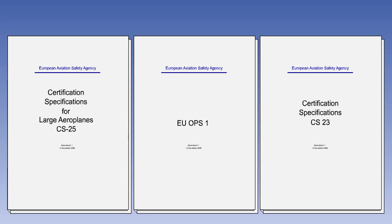In this lesson, we will look at the EU regulations appertaining to aircraft emergency lighting systems and we will see how these regulations are put into practice. The basic regulations are laid out in EU Ops 1, Commercial Air Transportation, Aeroplanes, with greater detail being provided in CS23, Normal, Utility, Aerobatic and Commuter Category Aeroplanes and CS25, Large Aeroplanes.